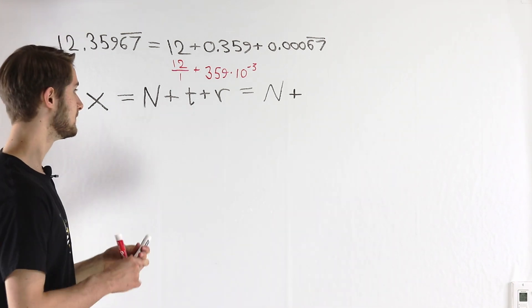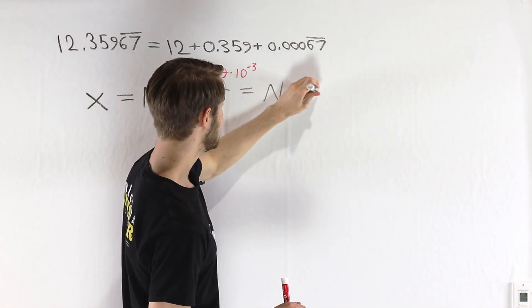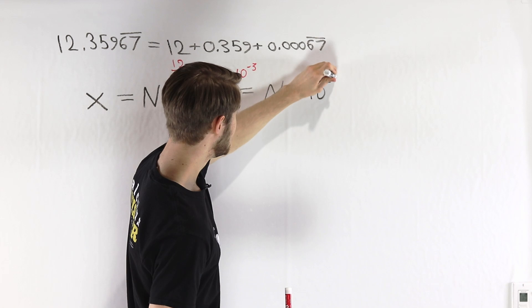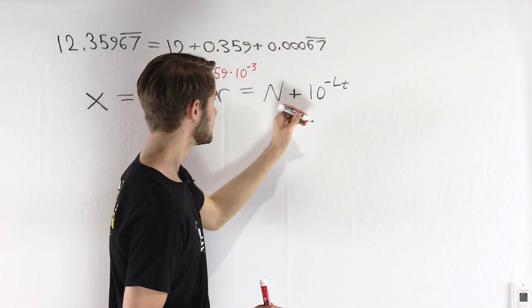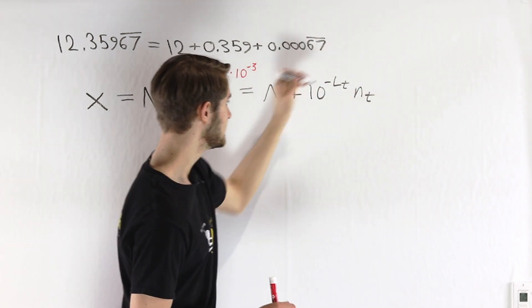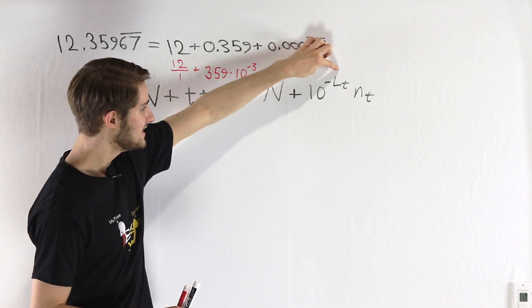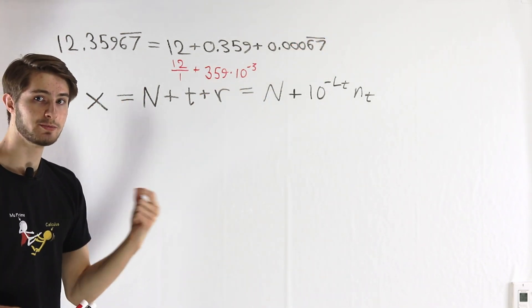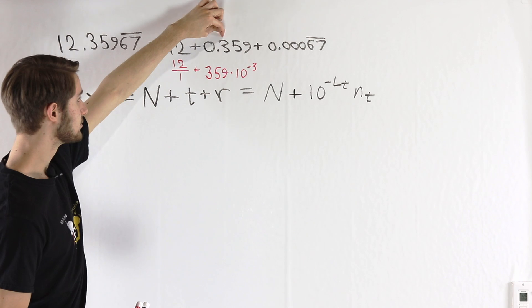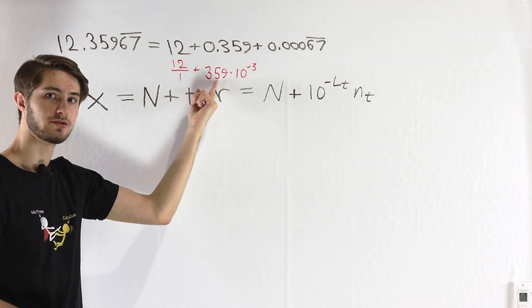For a general terminating decimal, we can write that as 10 to the negative l_t times n_t. In this case, l_t is the length of our terminating decimal. The length of 359 was 3 because we had 3 digits.